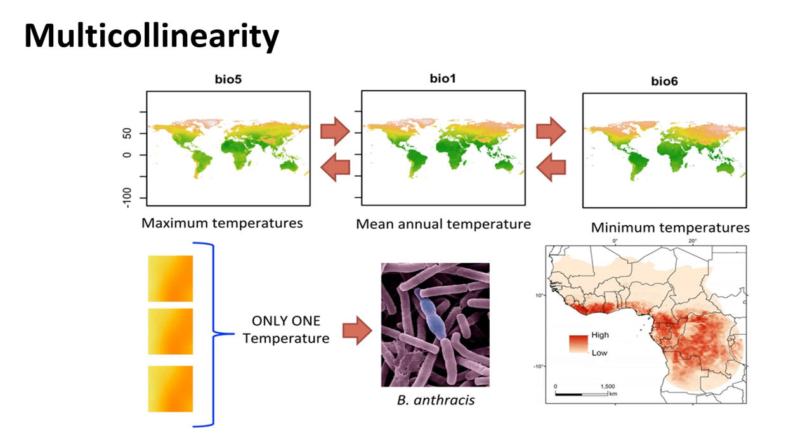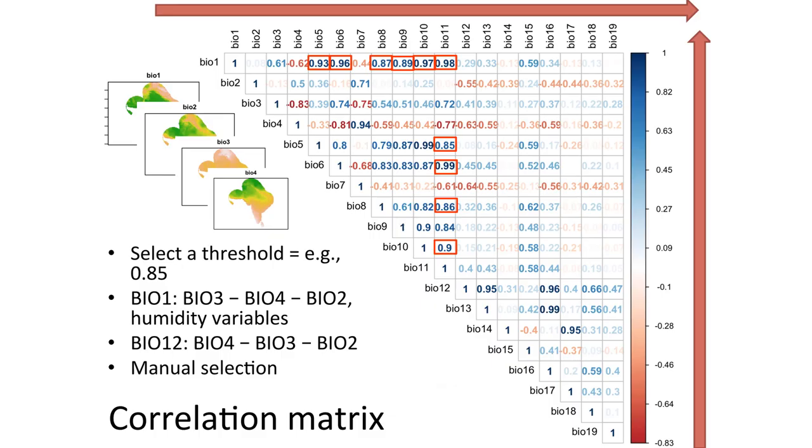So in this case, with anthrax, for example, this paper was created by Daniel Romero, and he used one temperature variable after running a principal component analysis or creating a correlation matrix. For example, here, as you see, he ran the analysis and found out some correlation. For example, the Bio-1, as you see, correlated with Bio-5, Bio-6 in red boxes and Bio-8, 9, 10, and 11.